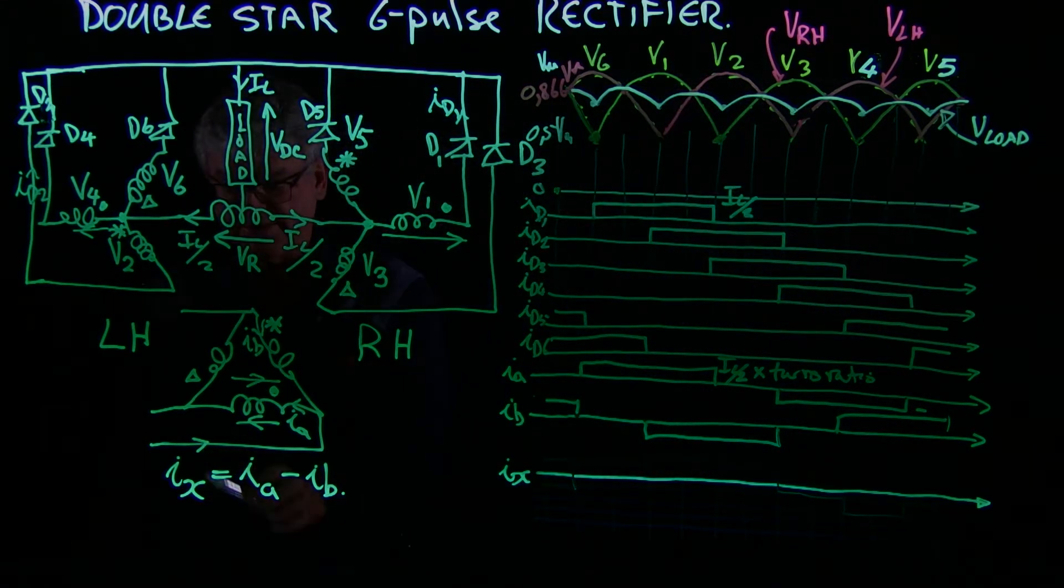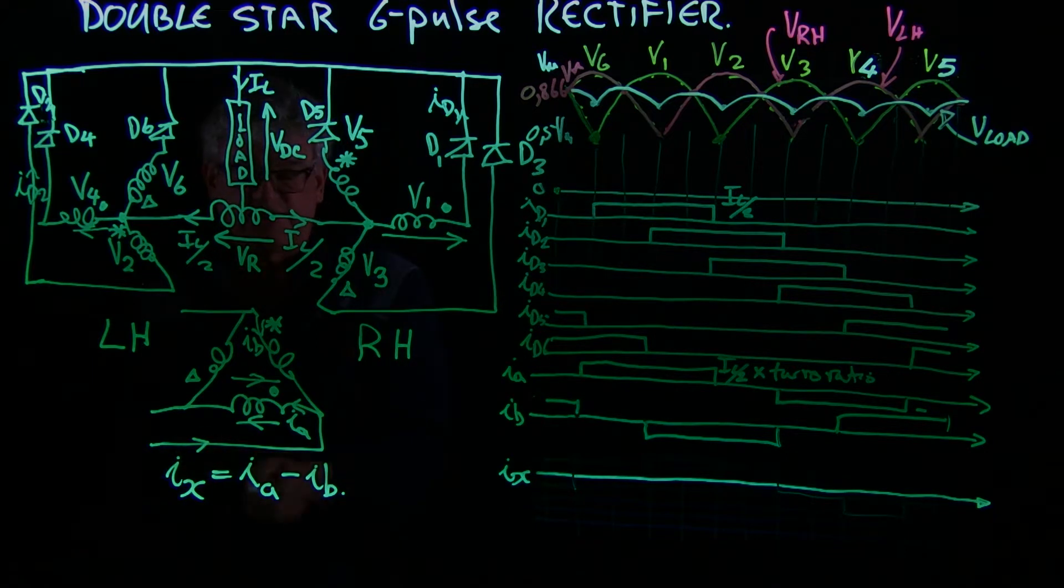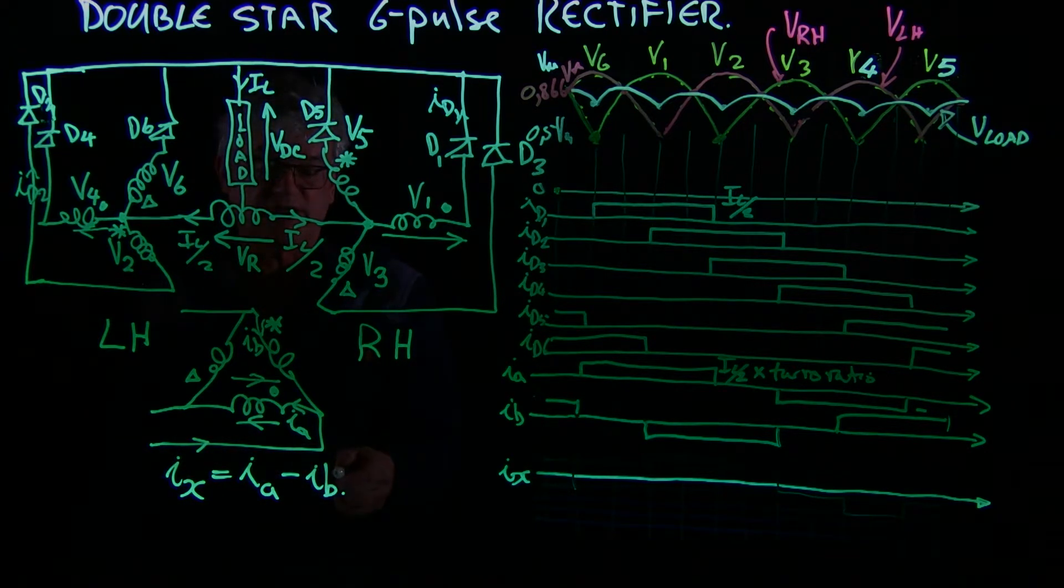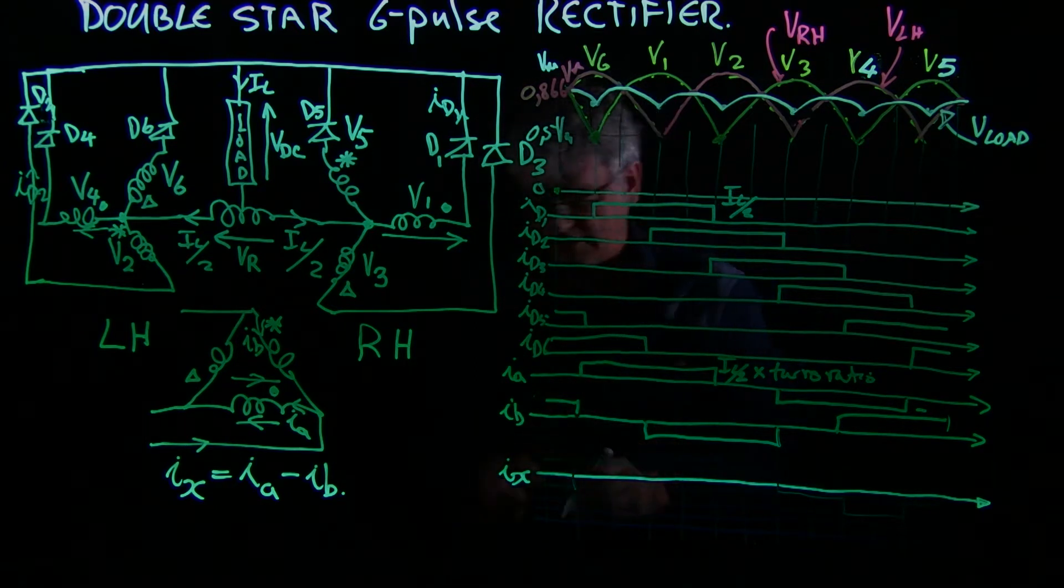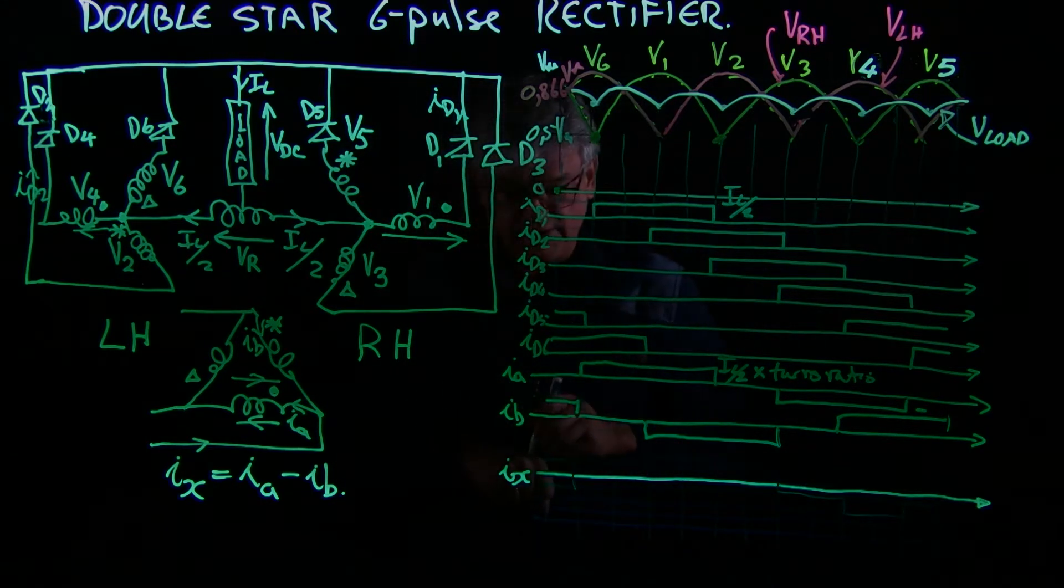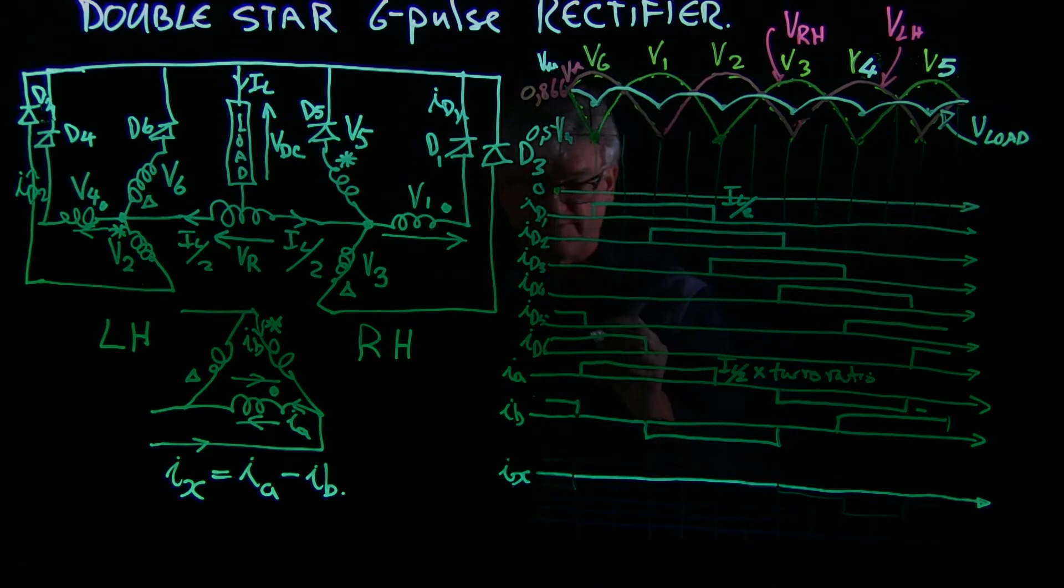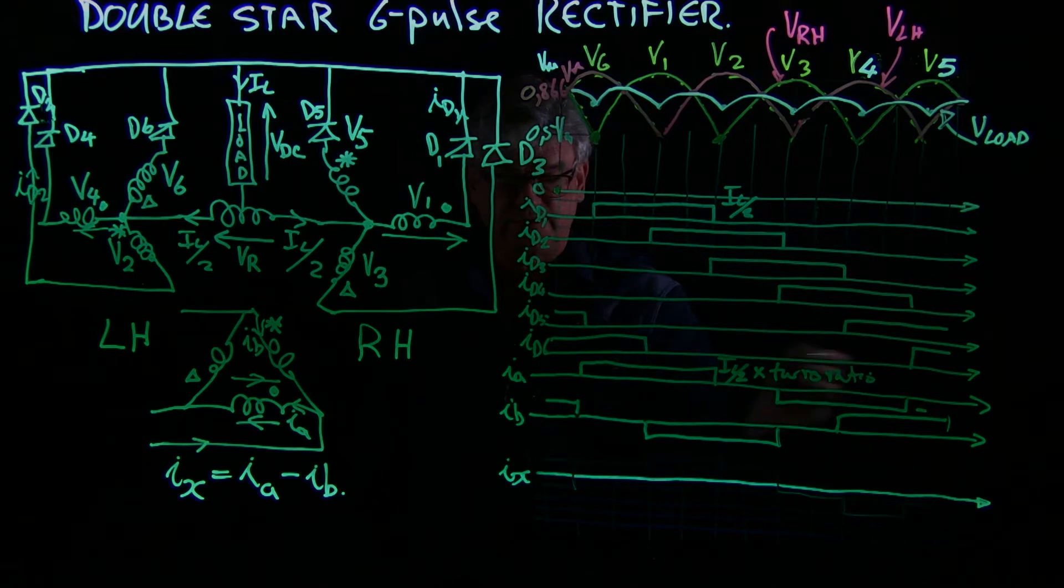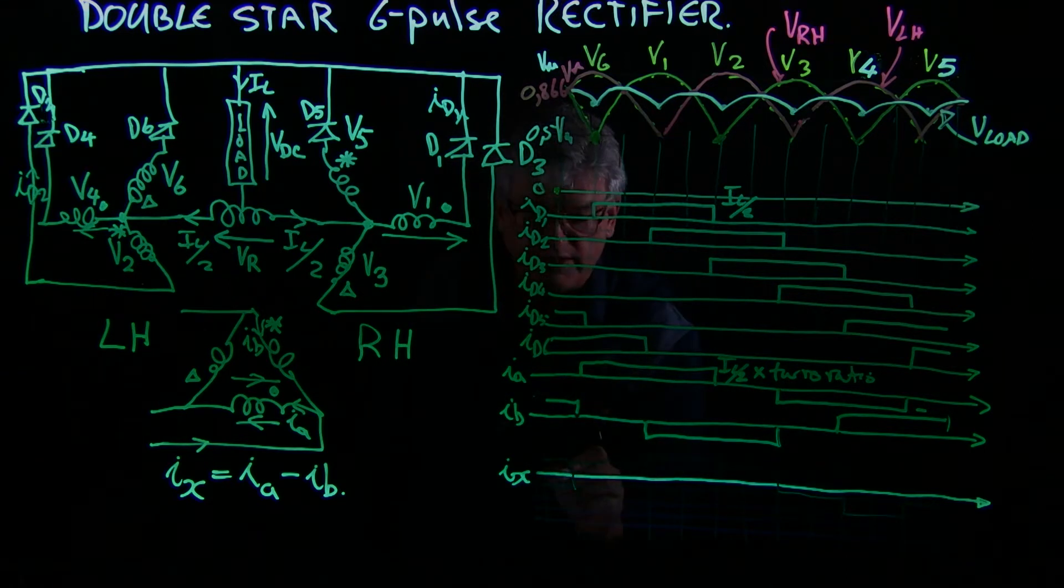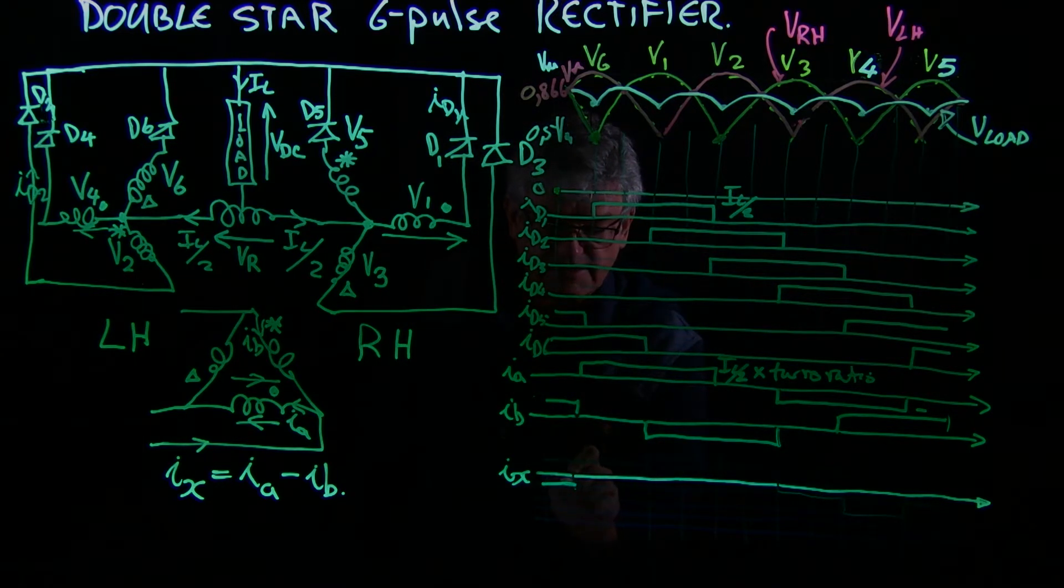When we come here to Ix, the line current, we see that it is Ia minus Ib, so all we now have to do is go and logically do that subtraction. 0 minus IL over 2 times the turns ratio is minus that value.